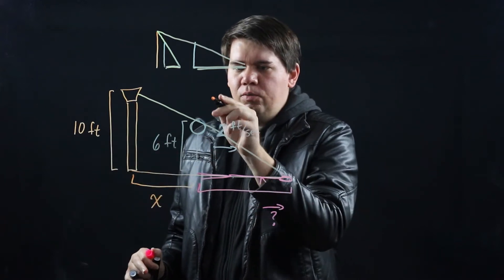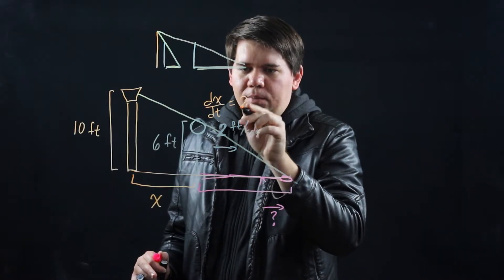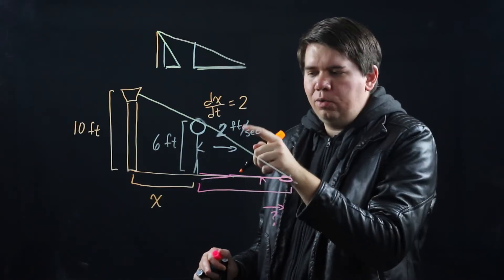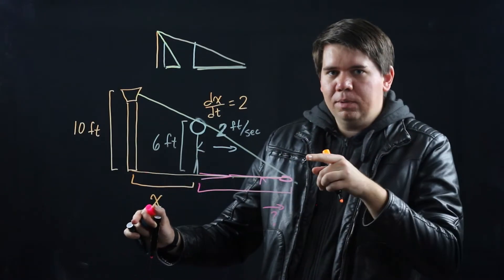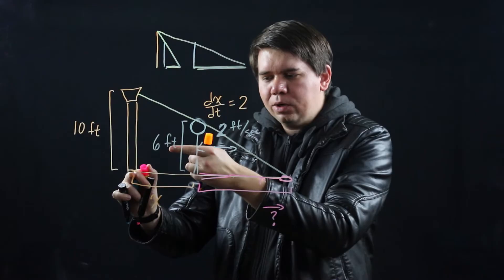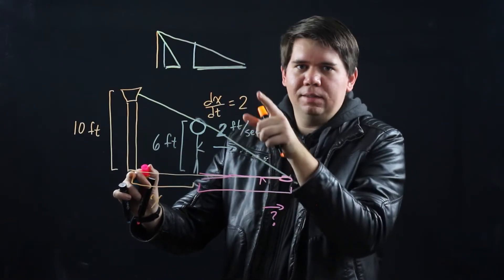So 2 would just be your change in x over time. It's a positive 2 in this problem because the x is increasing as the person walks away from the lamppost. If they were walking towards the lamppost, it would be negative 2. But since they're walking away from it, it's positive 2.